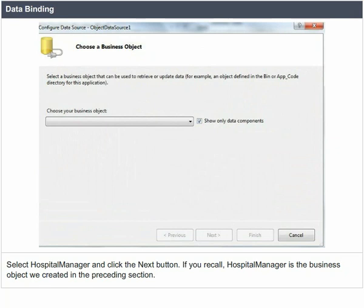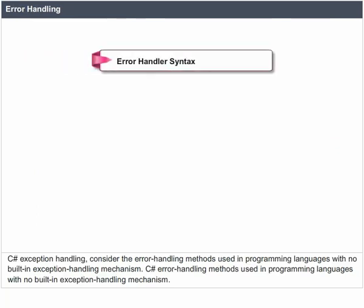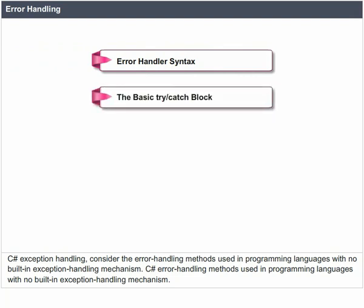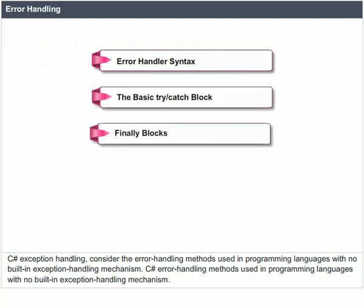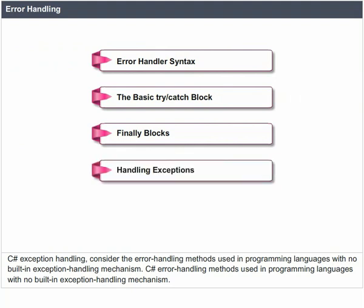Error Handling. C-Sharp exception handling considers the error handling methods used in programming languages with no built-in exception handling mechanism. Error handling syntax includes: the basic try-catch block, finally blocks, handling exceptions, and checked and unchecked statements.